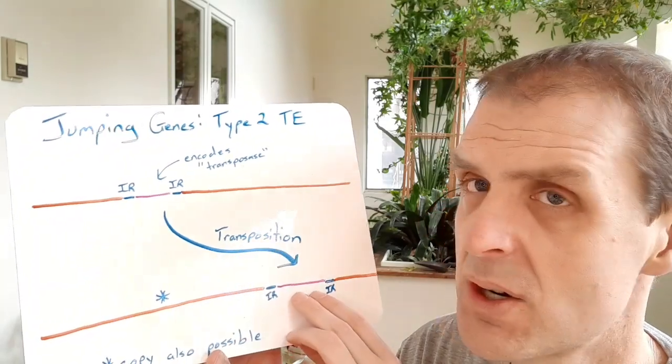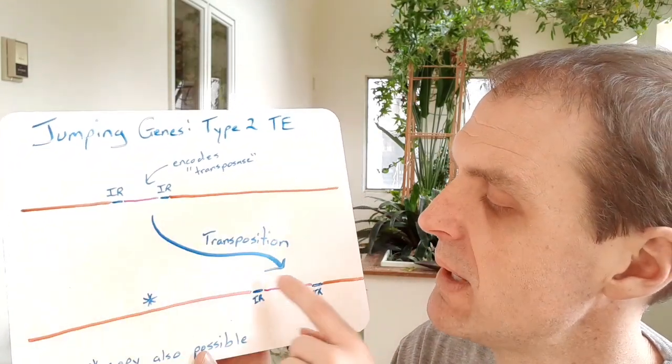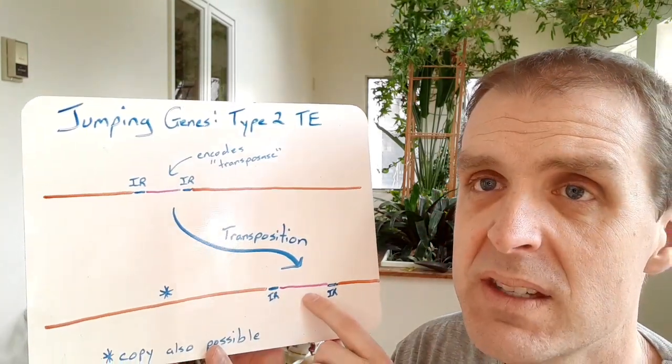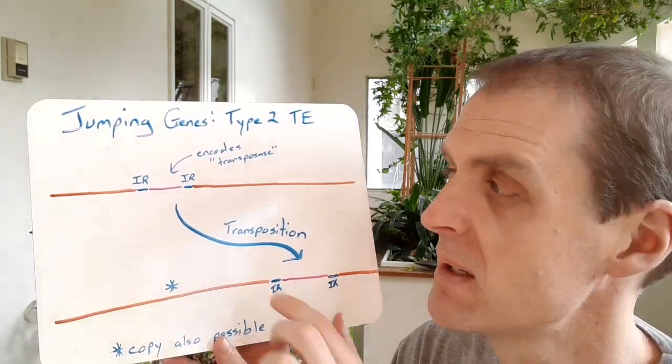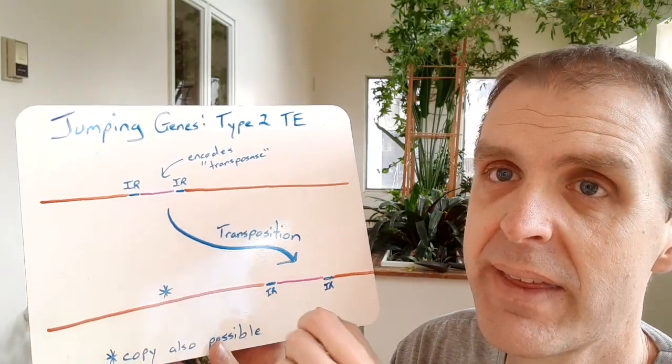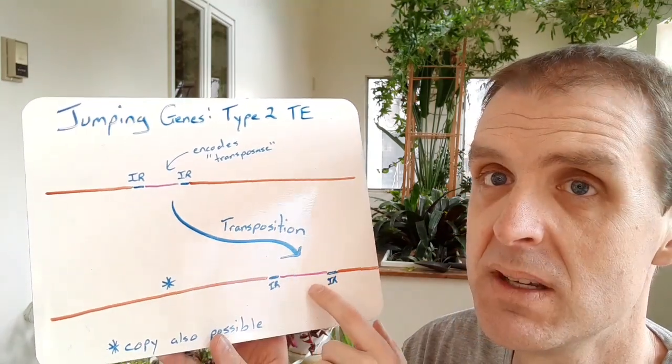That's called transposition, taking it from one place into another. This is where the jumping genes really makes sense, because it jumps out of that place and then into a new place in your genome.